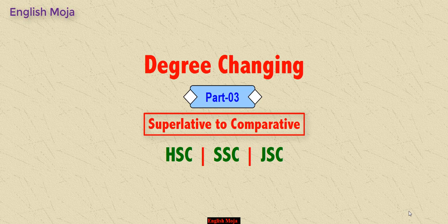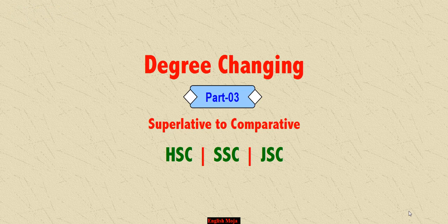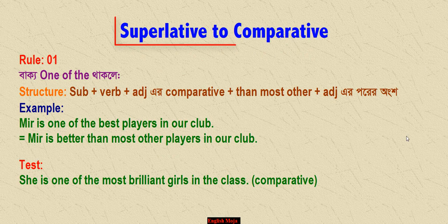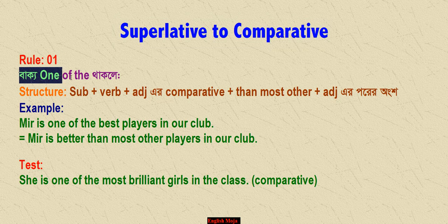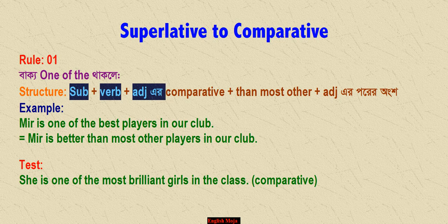This class is the first class of comparative. As you can have degrees, now you can select that. Today the class covers superlative to comparative. The structure is: first the subject, then the verb, then the adjective and comparative.